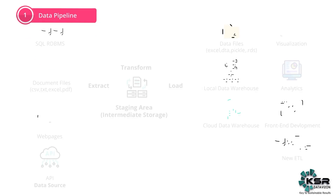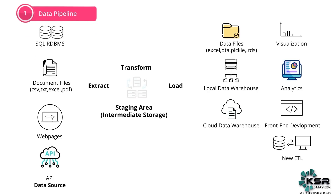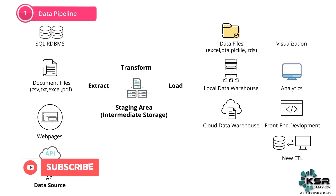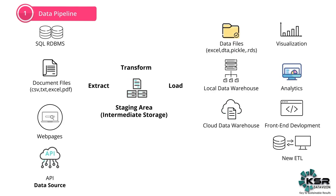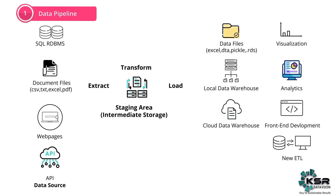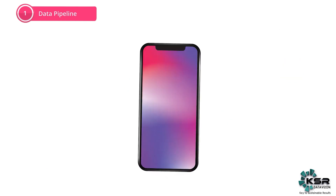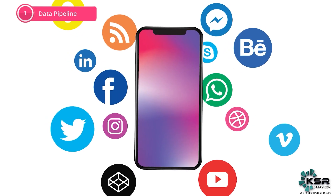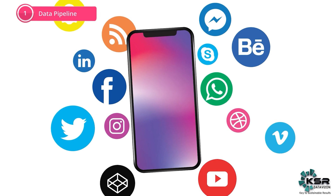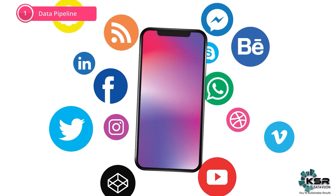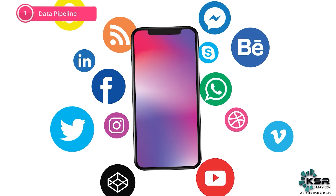When I say data pipeline, in reality we are getting data from different data sources in the form of flat files, Excel files, JSON files, and majority of the data we also get from on-premise. Our basic need is to gather all of this data into a single source and from there send it for reporting. For example, at KSR Data Vision we get a lot of requests from LinkedIn, Instagram, Facebook, and WhatsApp. We collect all of this data, store it at one place, and then start chasing our leads. This is what data engineers do.